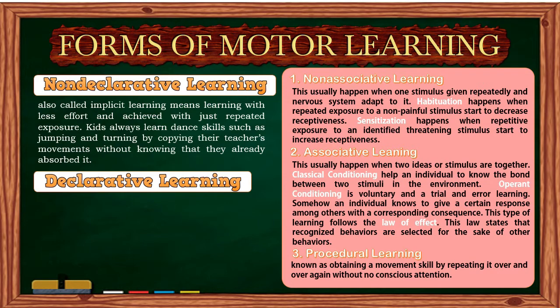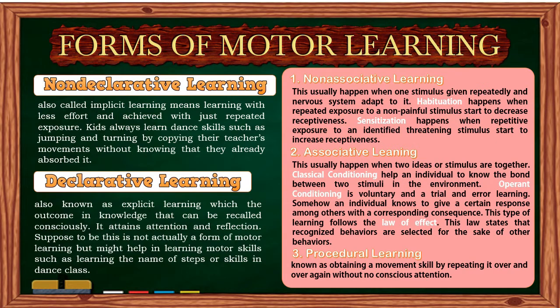Procedural learning is known as obtaining a movement skill by repeating it over and over without conscious attention. Progress of learning is slow through continuous repetition and expressed through polished performance. Declarative learning, also known as explicit learning, produces knowledge that can be recalled consciously. It requires attention and reflection. While not strictly a form of motor learning, it may help in learning motor skills, such as learning the names of steps or skills in dance class.